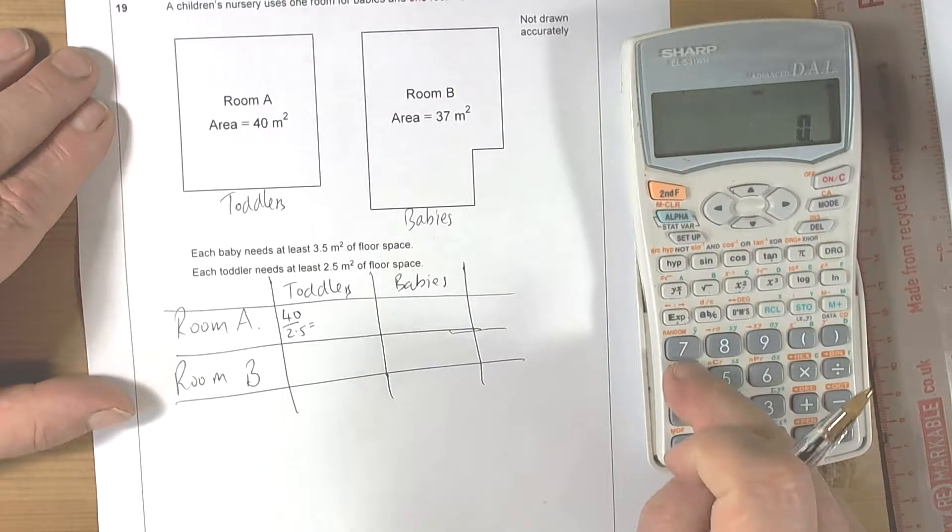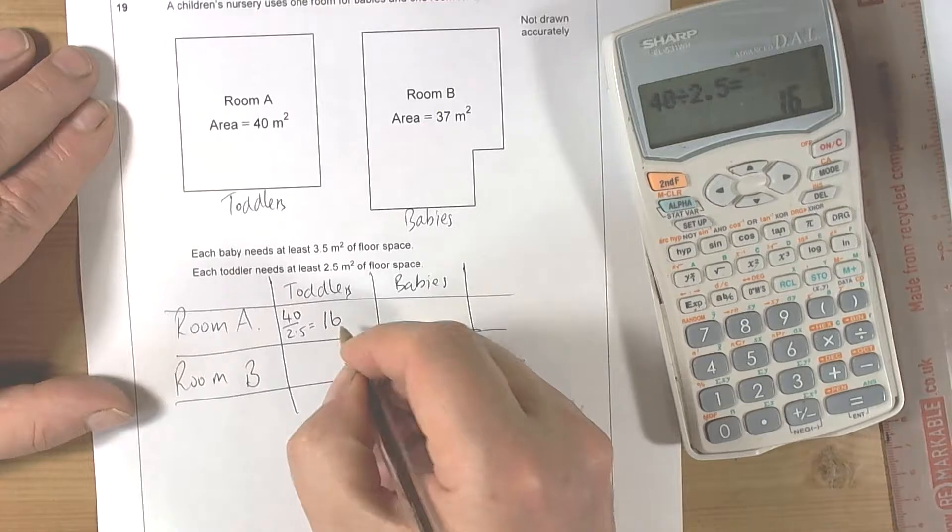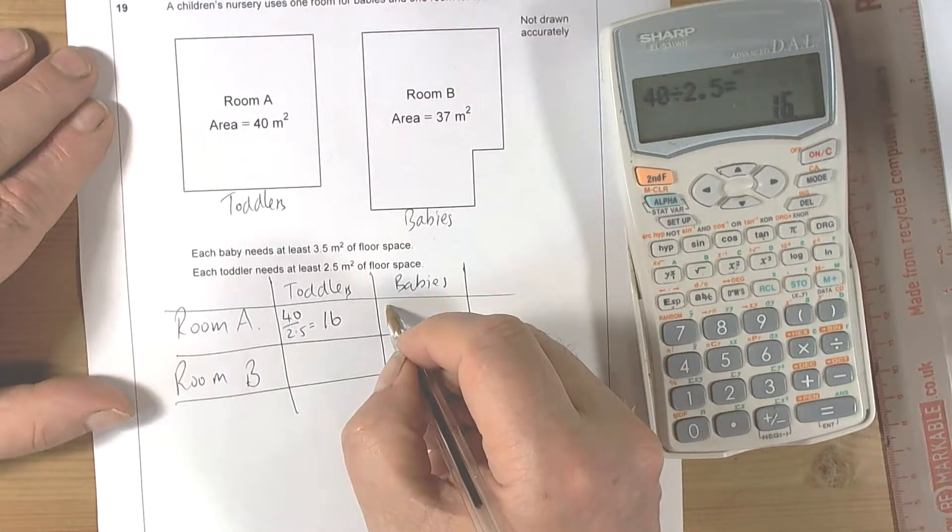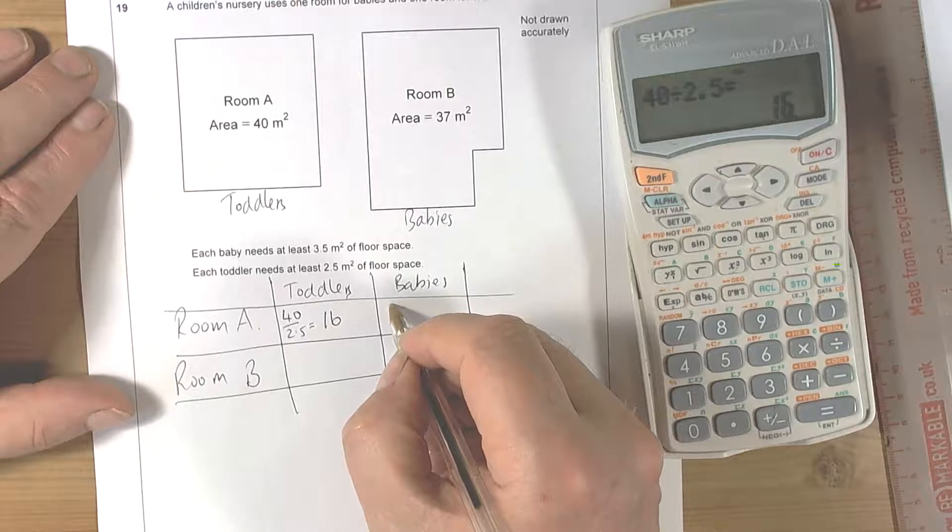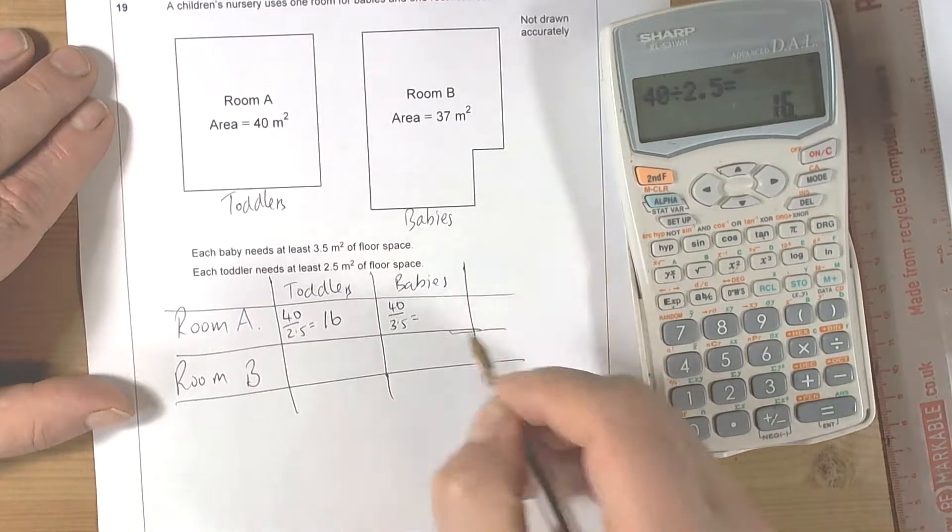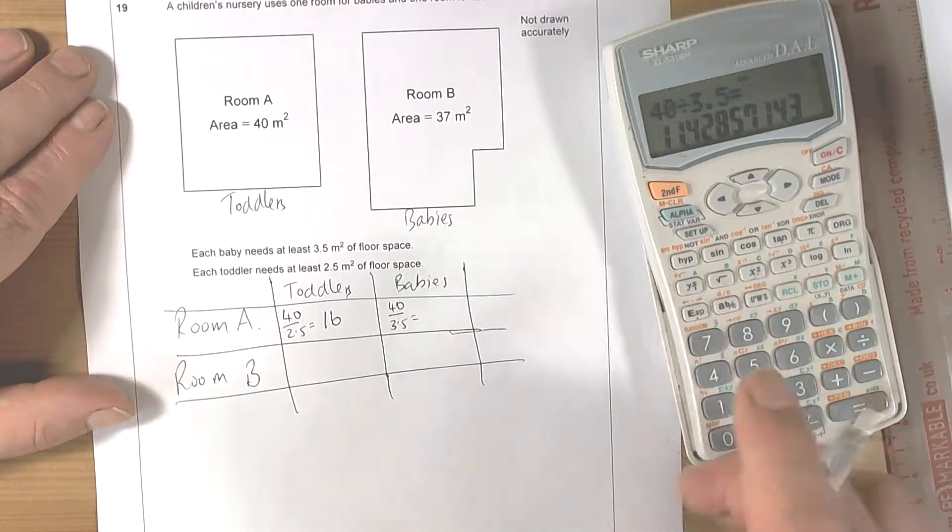Calculate that question. So 40 divided by two and a half is 16. And babies in room A, we can do 40 divided by three and a half. So 40 divided by three and a half is 11.